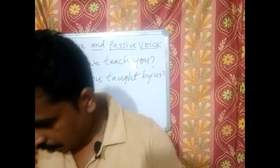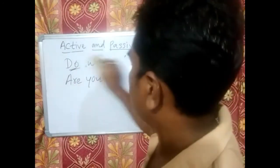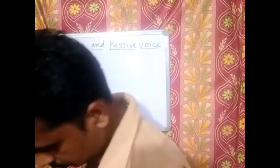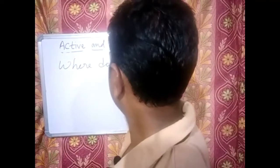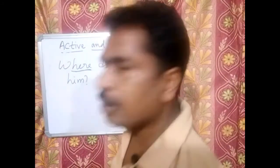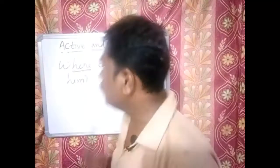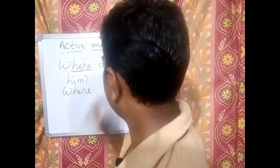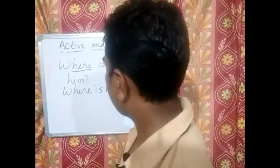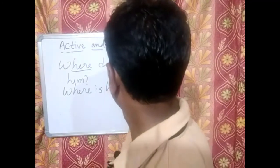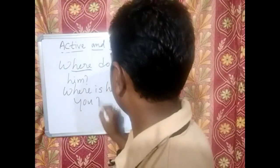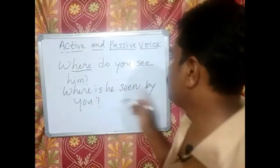Now let us come to sentences with question words, where WH-question words are used. For example, the sentence 'Where do you see him?' has a question word. In such situations, you will begin with the question word: 'where,' then 'him' changes to 'he,' and 'see' becomes 'seen.' So the passive form is: Where is he seen by you? You see, we did not repeat 'do.'